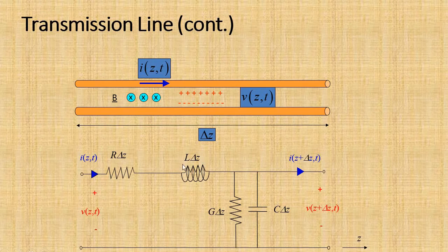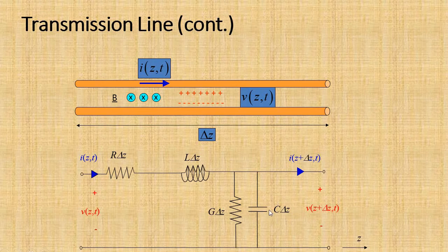L·ΔZ means this inductance represents a small section of the transmission line. Basically, we know that there are two conductors in the transmission line, and between the two conductors there is a dielectric material. So the electrical energy associated with the line is represented by capacitance times ΔZ.